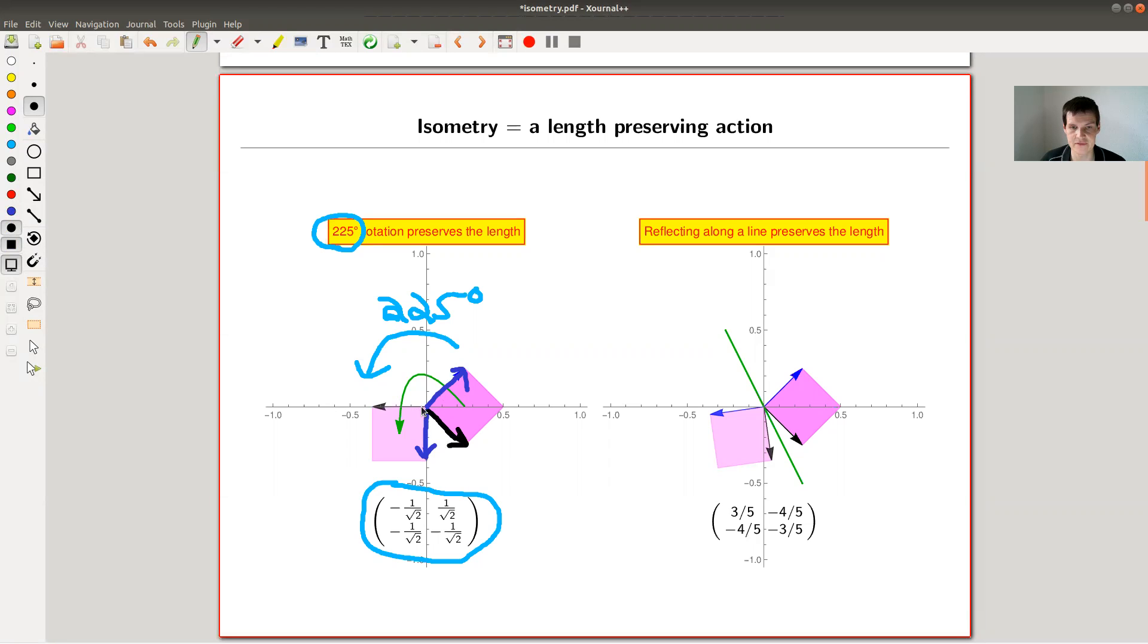It ends up down here. And as you can see, this still has the same length. And here's a black vector, it ends up here. And as you can see, the black vector still has the same length. So isometry should be a length preserving action. That's the definition. And this rotation certainly preserves lengths. It funnily also preserves angles, but I'm not talking about preserving angles right now. I'm talking about preserving lengths.